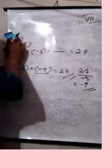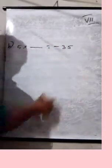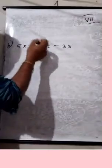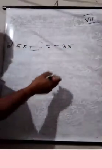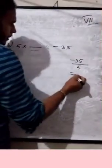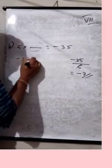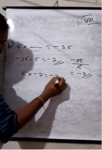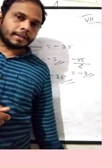Next one: 5 into dash equals minus 35. When multiplying 5 by a number you get minus 35. So minus 35 divided by 5 equals minus 7. The missing number is minus 7, because 5 into minus 7 equals minus 35.